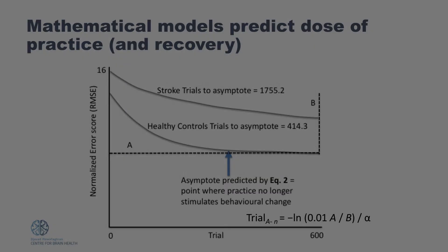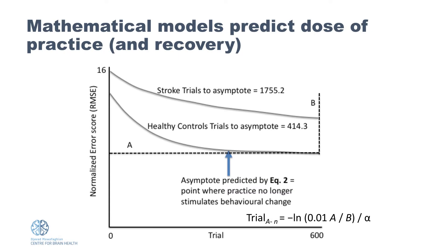One way we've approached this is by, as my grad students say, 'putting some math on it.' Could we use big data, artificial intelligence, and mathematical modeling to develop algorithms that we can weight with people's behavior, characteristics about their lesion, and biomarker data about the state of the brain — and come up with predictive models? We have early algorithms that tell me how much practice any one person would need before they learn a skill.